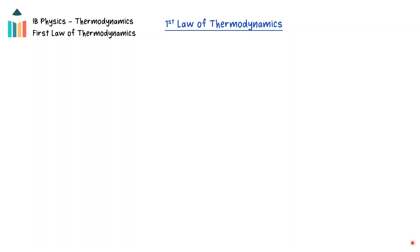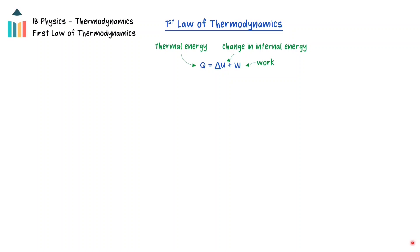Thermodynamics, in part, relates to using thermal energy and the internal energy of a closed container of an ideal gas to do mechanical work. The first law of thermodynamics describes this relationship, where Q is the thermal energy entering the ideal gas, delta U is the change in internal energy of the ideal gas, and W is the work done by the ideal gas on the surroundings. The first law of thermodynamics is a statement of conservation of energy for a fixed number of moles of an ideal gas.